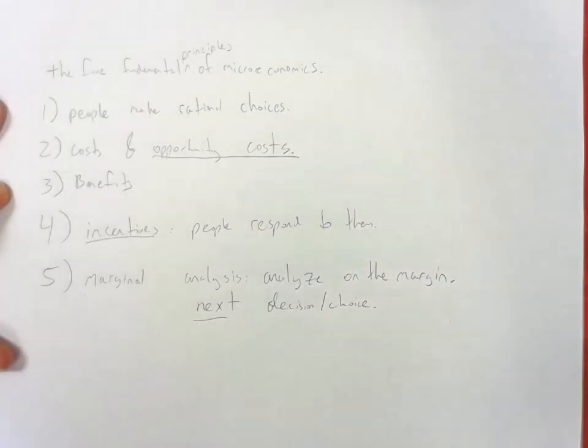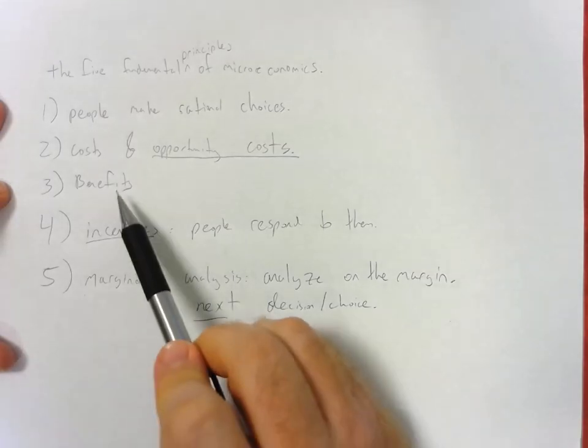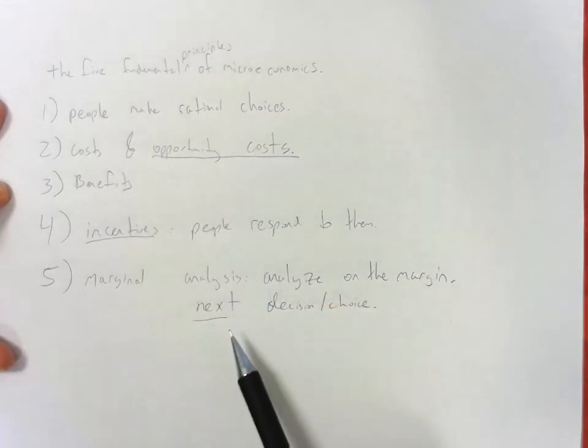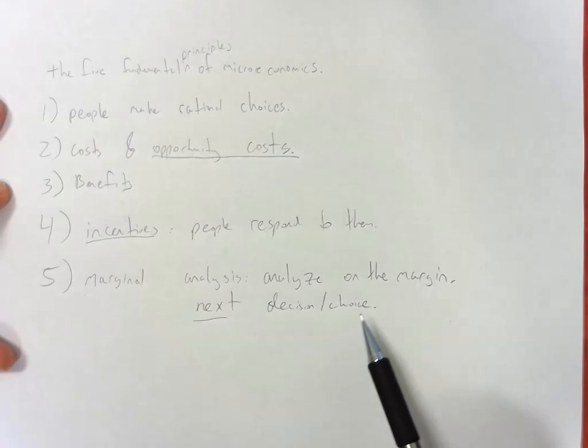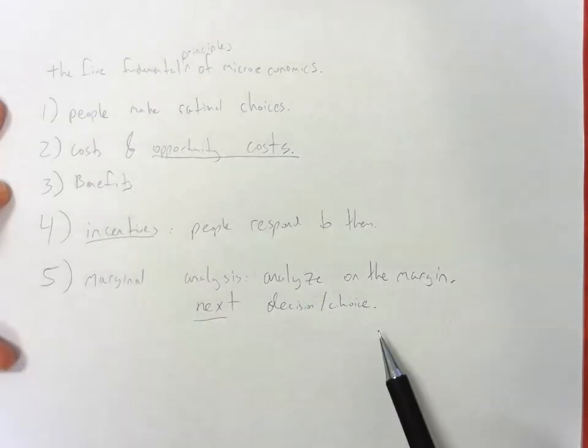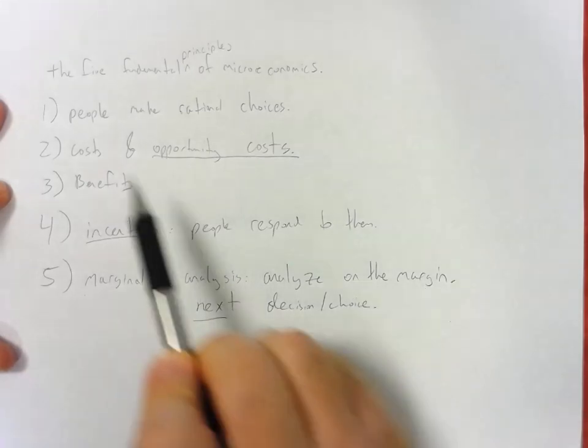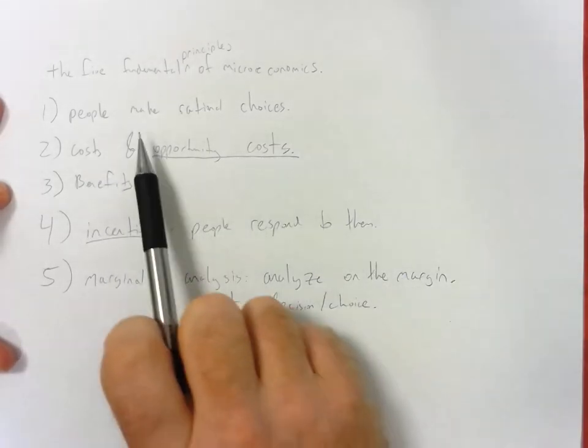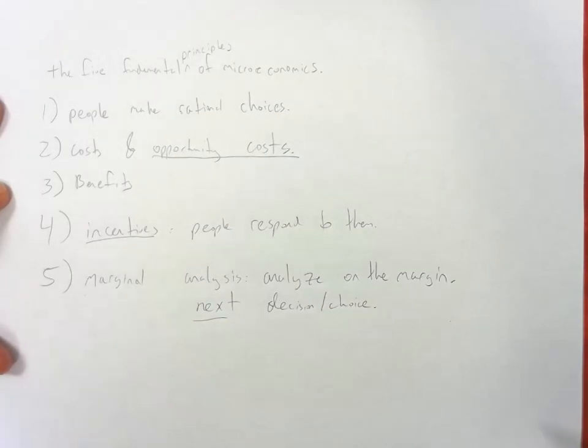So, the example here would be, are we going to consider how many oranges we're going to buy at the supermarket? No. What we do is we consider the value of that next orange. What is the benefit or the cost of that next orange. The marginal benefit of the next orange. Or the marginal cost of the next orange. And that's how people make these rational choices.